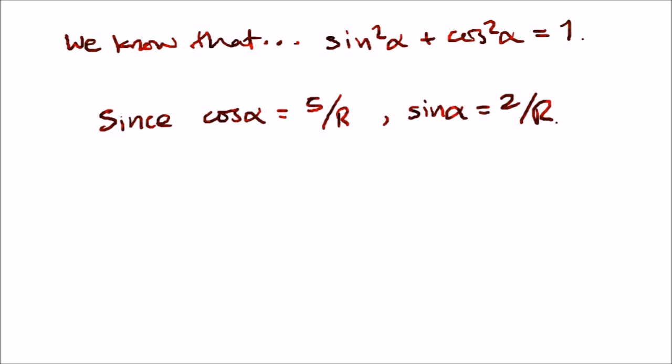Since we know that cos alpha equals 5 over r and sine alpha equals 2 over r, we know that this full expression can work. Just literally popping in the values, we have sine squared alpha which is literally 2 over r all squared, giving us 4 over r squared, plus cos squared alpha which is squaring 5 over r, which is 25 over r squared. All of that equals 1. Now we just add up the fractions. This should give us 29 over r squared equals 1.